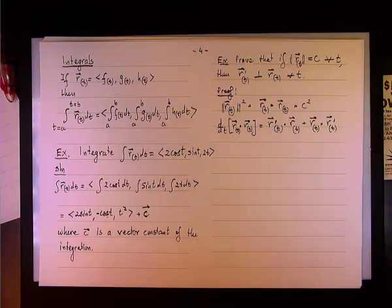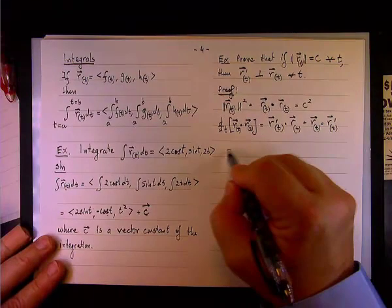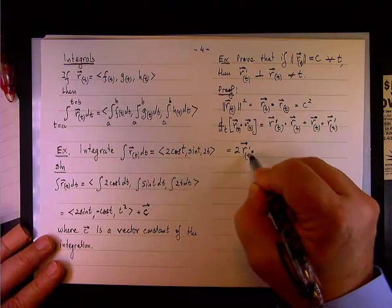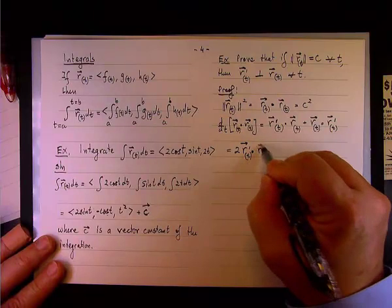But the dot product is commutative - a dot b equals b dot a. So this equals 2r' dot r.